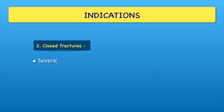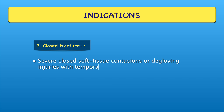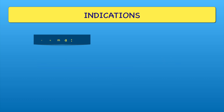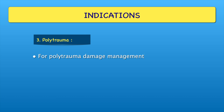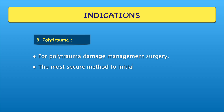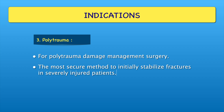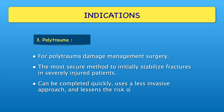Closed fractures with severe closed soft tissue contusions or degloving injuries can be managed with temporary bridging. For polytrauma damage management surgery, this is the most secure method to initially stabilize fractures in severely injured patients. It can be completed quickly, uses a less invasive approach, and lessens the risk of the patient suffering extra surgical trauma.